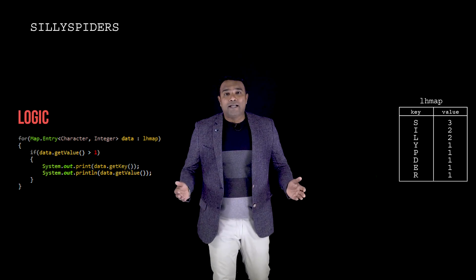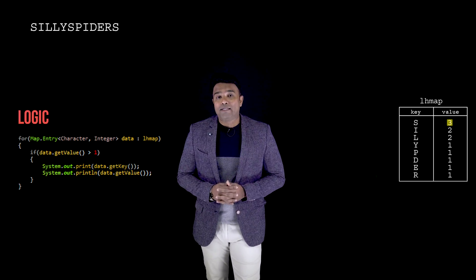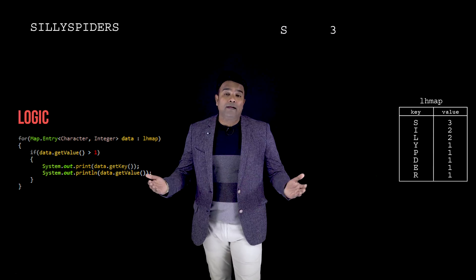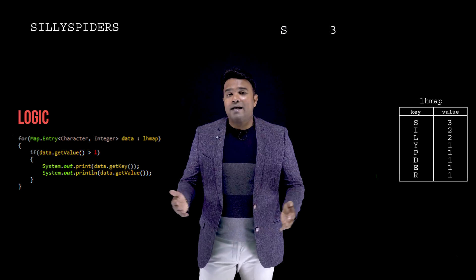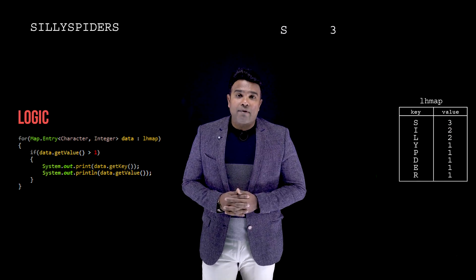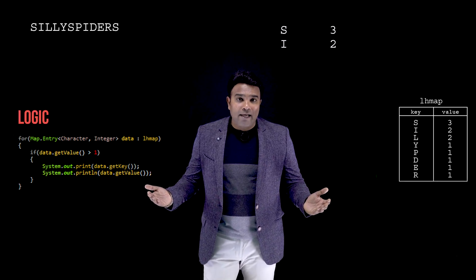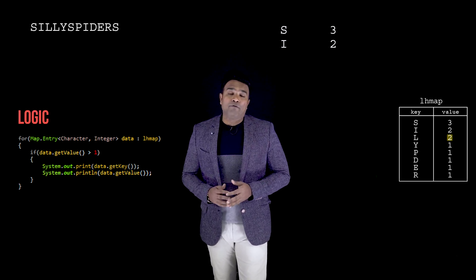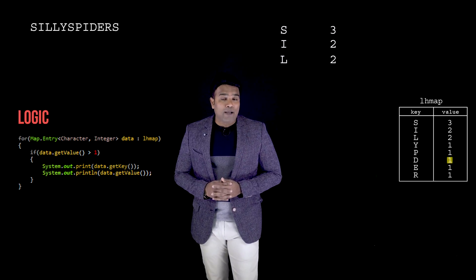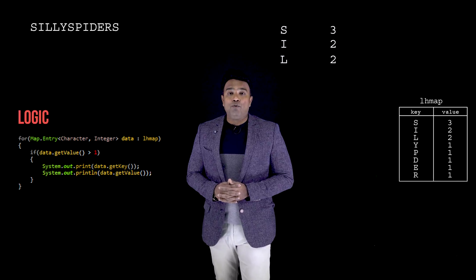For the first iteration, when I call data.getValue(), the value is three, which is greater than one. So I enter the if condition and it prints both the key and the value. I then iterate to the next data — the value is two, which is again greater than one, so the if prints the key and value again. Iterating once more, the value is again two, greater than one, so it prints once more. After that, no remaining values in the map are greater than one, so the control never enters the if again and exits the loop with the complete output.